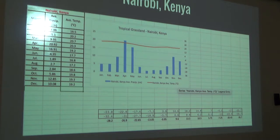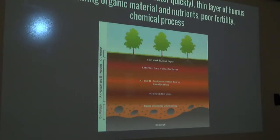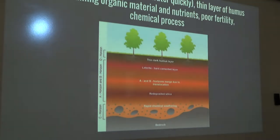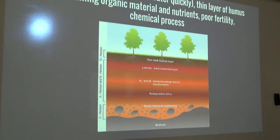An example climatograph shows that from May to November is the wet season in Costa Rica, with heavy drought from about January to April. In another area in Kenya, this doesn't follow the November to May wet season, but has heavy drought from around June to October.